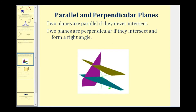Now let's talk about planes. Two planes are parallel if they never intersect. Looking at this figure, plane N is parallel to plane P. If two planes are not parallel they would intersect, and if they intersect and form a right angle the two planes are perpendicular. In this case, plane M appears perpendicular to both plane N and plane P because this angle looks like it's 90 degrees.